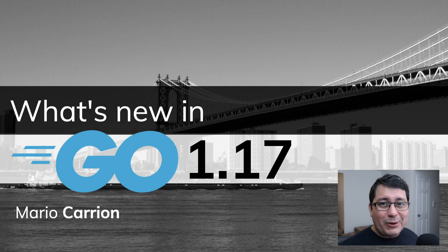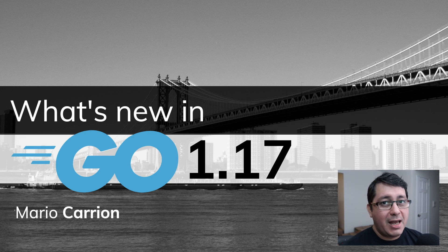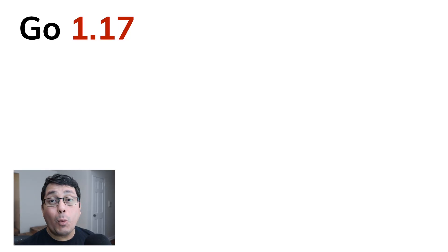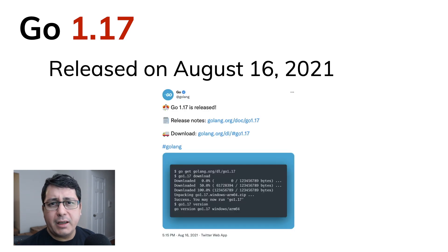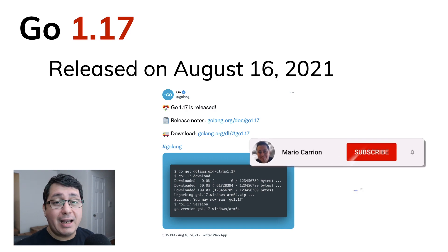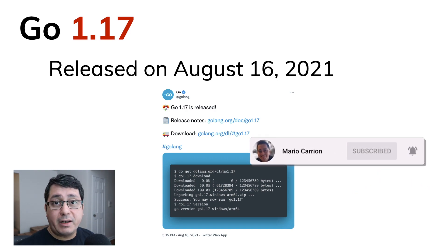Hello, my name is Mario. Welcome to another video. In today's episode I'm going to be sharing what is new with the most recent release of Go — this is version 1.17. Go 1.17 was released on August 16, 2021, which is about one week ago. This includes a few different changes that I'm going to be highlighting. I'm not going to be covering all the changes, but rather the ones that I believe make the most sense.